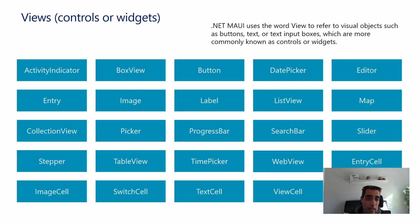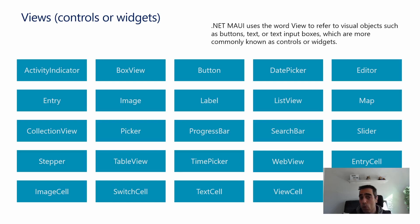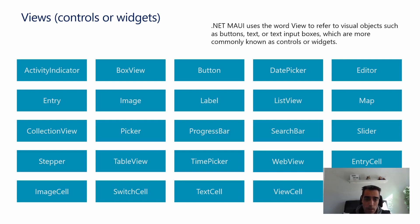There are also many views available. In .NET MAUI, a view refers to visual objects — buttons, text, input boxes — used to create the user interface; they are also called controls or widgets. There is a wide range, from simple ones like BoxView, Button, or Slider, to more complex controls like WebView, CollectionView, or the Border control.